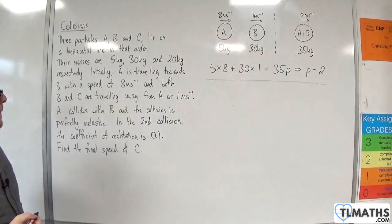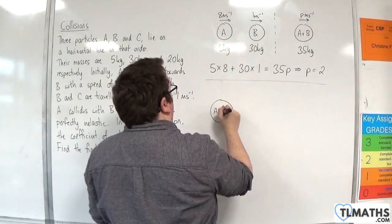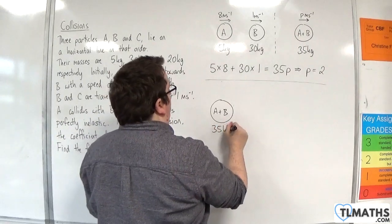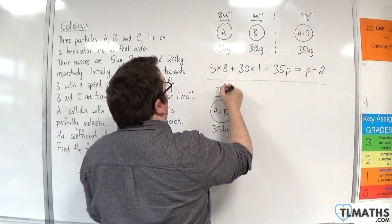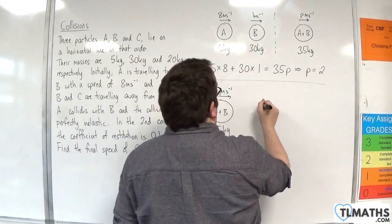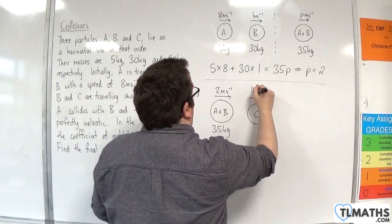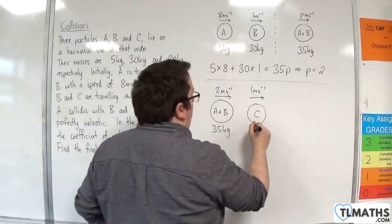So then, we have A and B coalesced into a single particle of 35 kilos, is now traveling towards C at 2 metres per second, which is traveling itself at 1 metre per second to the right, and C had a mass of 20 kilos.